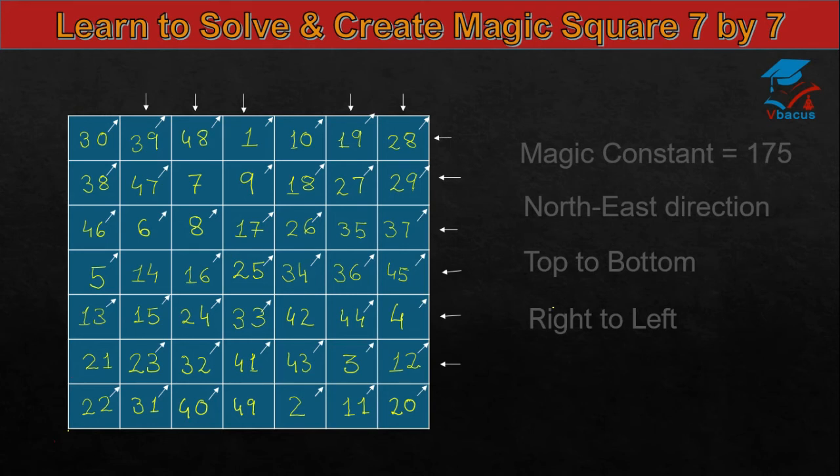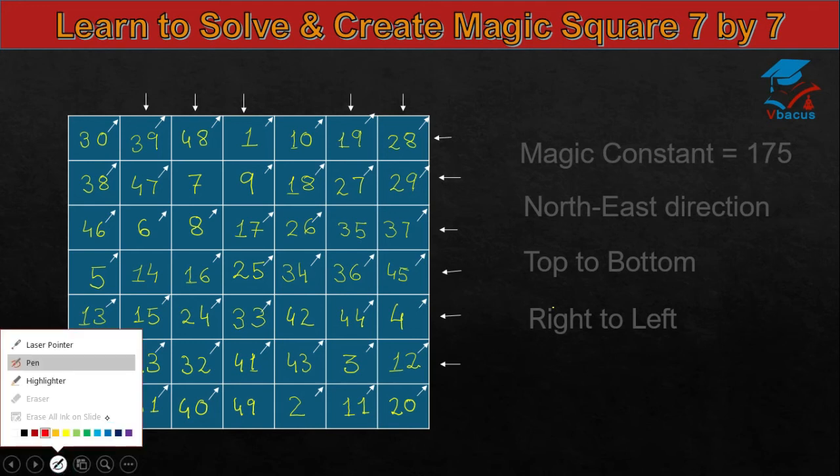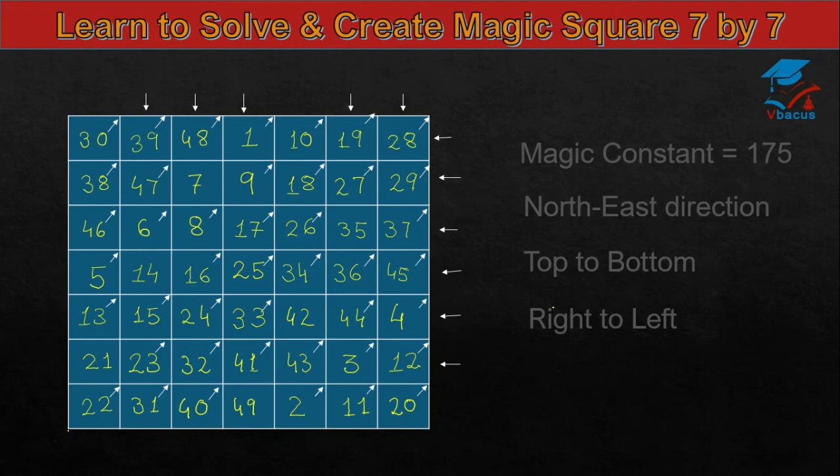If you check vertically, diagonally, then it will become 175. Here, 30 plus 39 plus 48 plus 1 plus 10 plus 19 plus 28 will become 175.